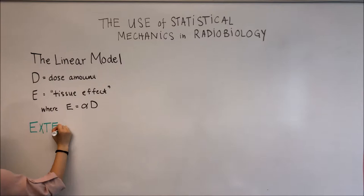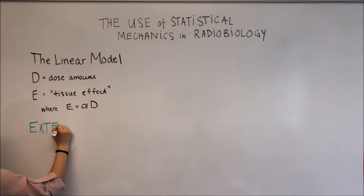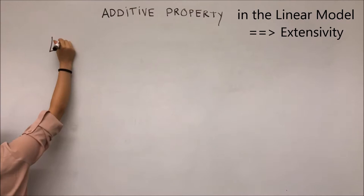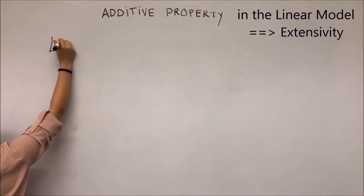This model is very helpful when considering extensive systems. This is primarily due to the fact that the additive property under the linear model holds for the tissue effect and thus the probability distribution.